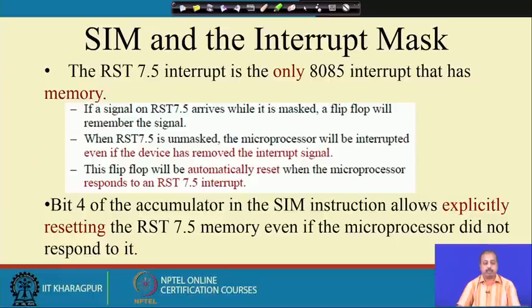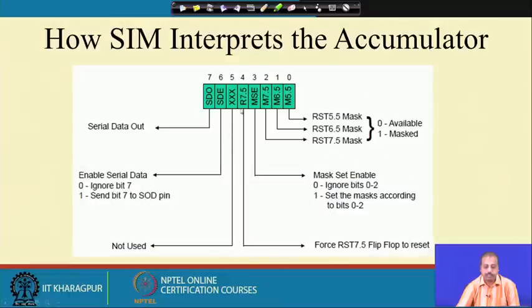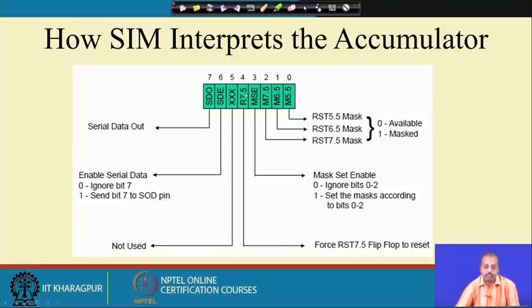If you want to reset this RST 7.5 memory so the processor does not respond to that interrupt, you can use bit 4 of the accumulator in the SIM instruction. Bit 4 allows explicitly resetting the 7.5 memory even if the processor did not respond to it. If you keep this bit as 1 and execute a SIM instruction, the RST 7.5 flip-flop will be cleared — so instead of entering the interrupt service routine, you simply reset that flip-flop.